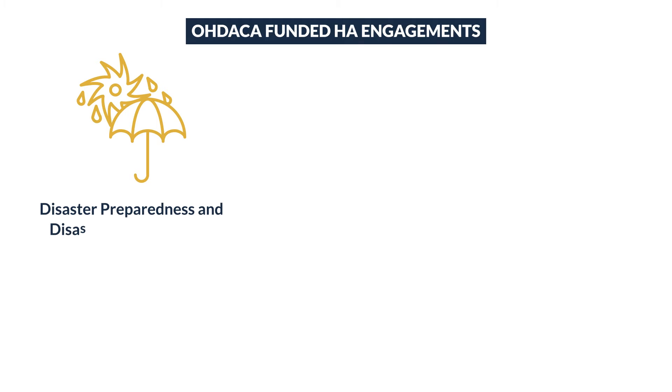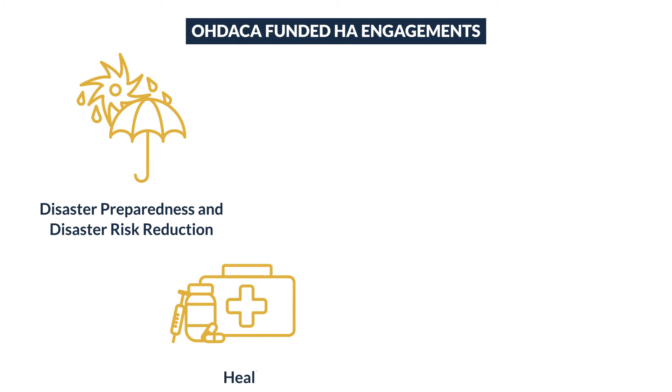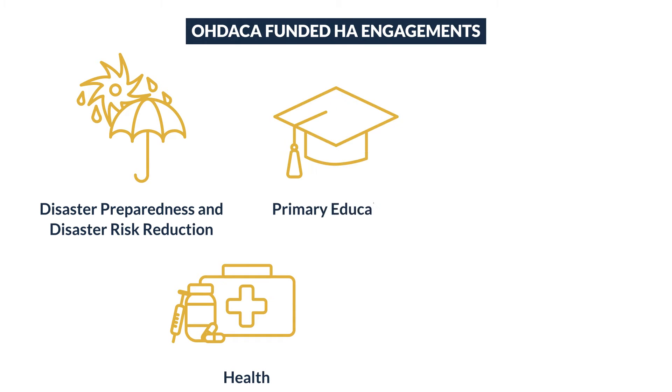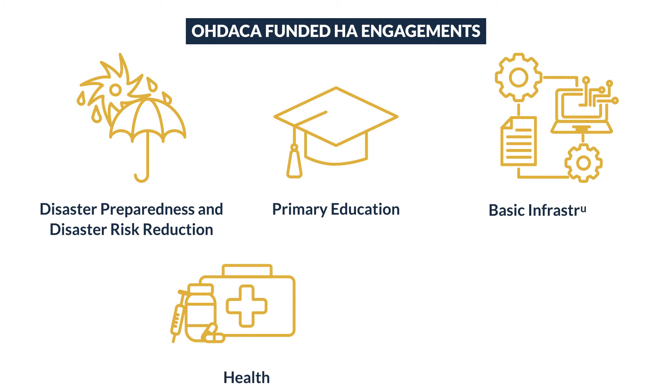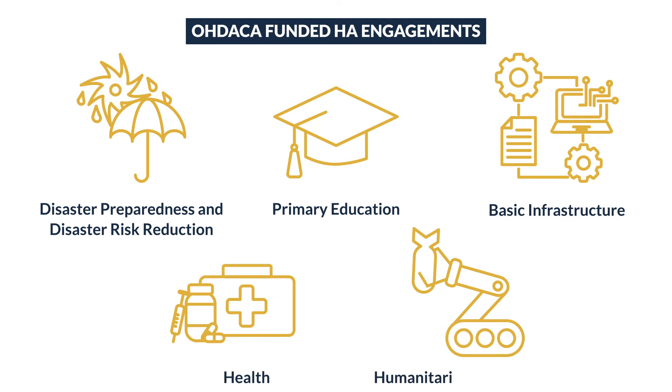ODACA-funded HA engagements fall into one of five primary sectors: disaster preparedness and disaster risk reduction, health, primary education, basic infrastructure, and humanitarian mine action.